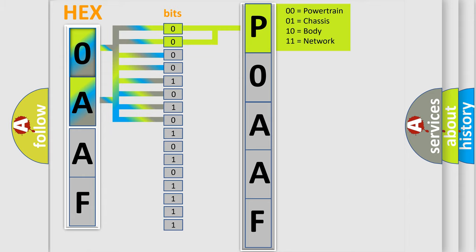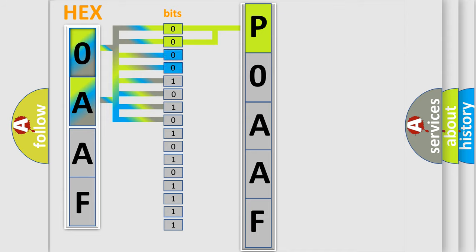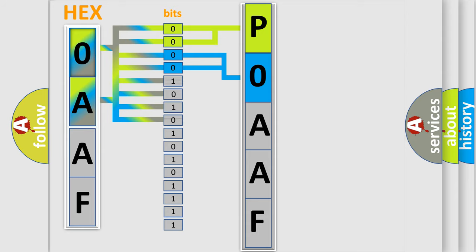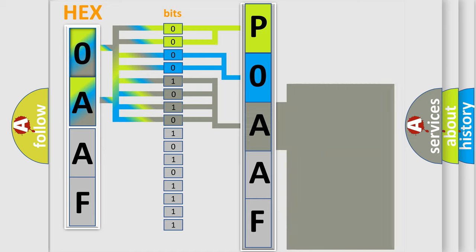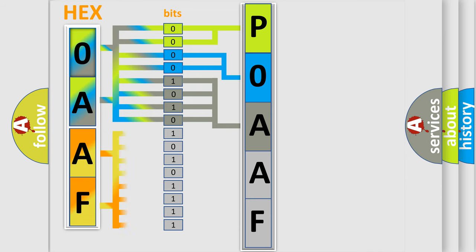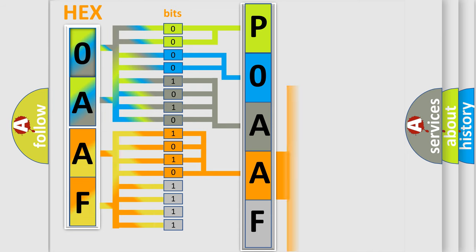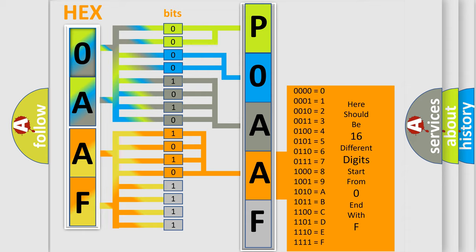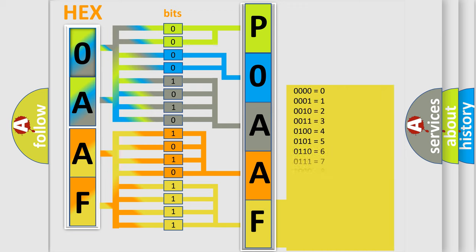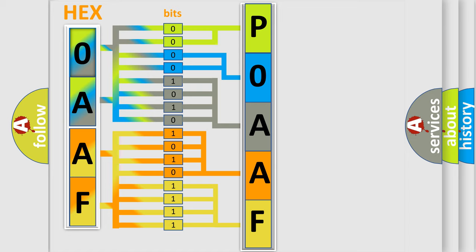By combining the first two bits, the basic character of the error code is expressed. The next two bits determine the second character. The last bits of the first byte define the third character of the code. The second byte is composed of a combination of eight bits: the first four bits determine the fourth character, and the last four bits define the fifth character. A single byte conceals 256 possible combinations. We now know how the diagnostic tool translates the received information into a more comprehensible format.